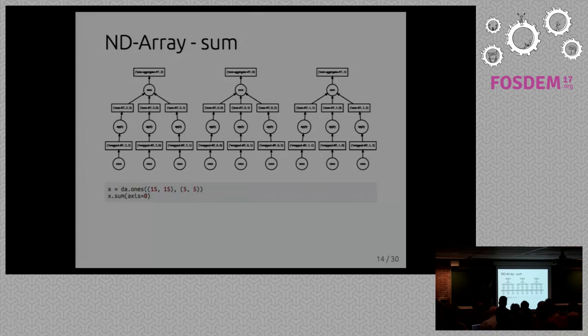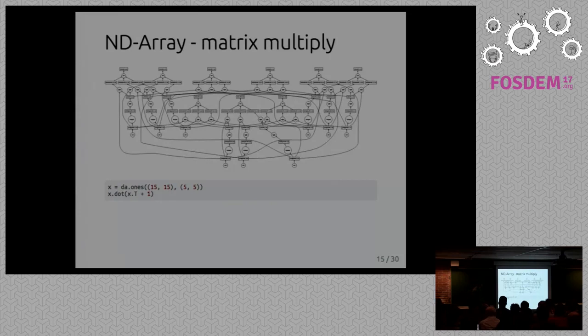For example, if you take a simple sum, the graph will not look that complex. These are all your chunks, all your different arrays. It will read them in, take a sum, and combine them - typically reducing them to smaller values. But you can also get much more complex graphs.